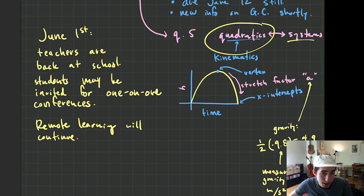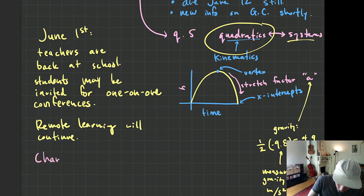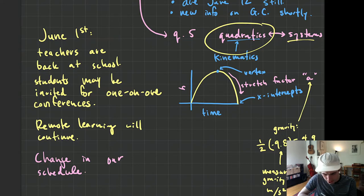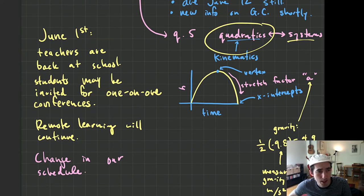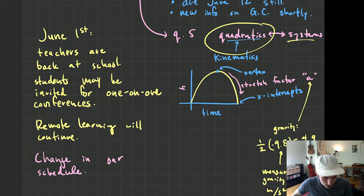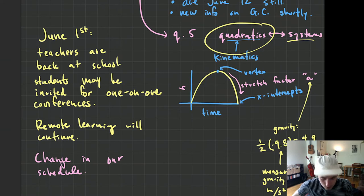There will be a change to our schedule. After June 1st, there will be a change in our schedule and I still haven't decided what that change will be. But the way it'll change is it'll most likely be that we will have classes every second day. I still want to think deeply about which day we would take off — whether it would be even days or odd days of the school day cycle.